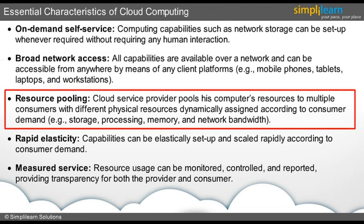Resource pooling — let us understand this characteristic through the example. We know that trains have the capacity to occupy hundreds of passengers for a single trip. Several passengers travelling to the same destination board a single train and are assigned separate berths according to their needs. This is similar to what cloud does, where multiple consumers are able to access virtual resources that are assigned to them. There is a sense of location independence where the consumer is generally unaware of specific details of the location.